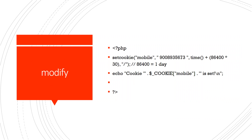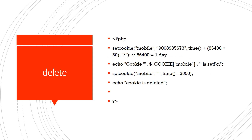How to modify a cookie: we already set the mobile number, and now you want to change it. You use the same setcookie function to modify. The previous value is changed to the new mobile number using the same syntax — there is no separate modify command. Only using the setcookie command can you change a previously existing value to a new one. How to delete a cookie: use setcookie with the same name but set the time to time() minus 360. So the cookie is deleted from the current time. The same setcookie function is used for creating, modifying, and deleting — only the arguments change.